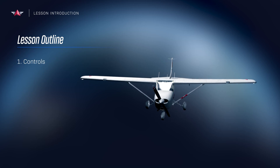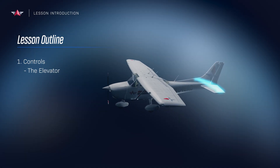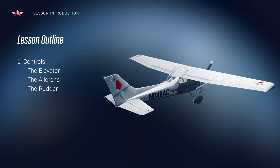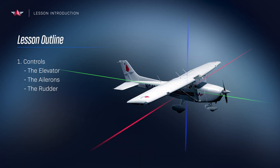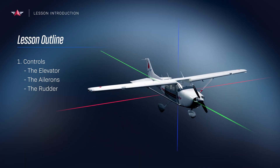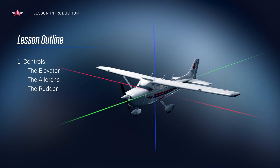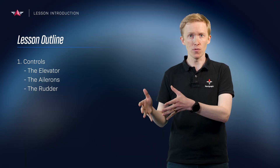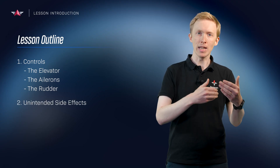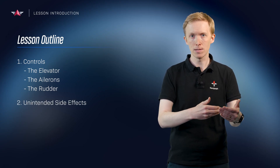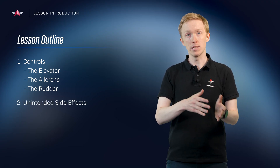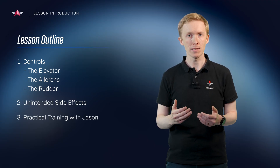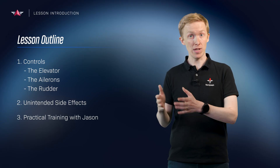We will look at the controls one by one: the elevator, the ailerons, and the rudder. They move the aircraft around each of the three axes and in doing so they make us go where we want to go. Once we are familiar with the control inputs and the primary intended reactions of the aircraft, we will move into the secondary unintended side effects. At the end of the lesson you will be ready to jump into the simulator and practice these effects in real time together with Jason.